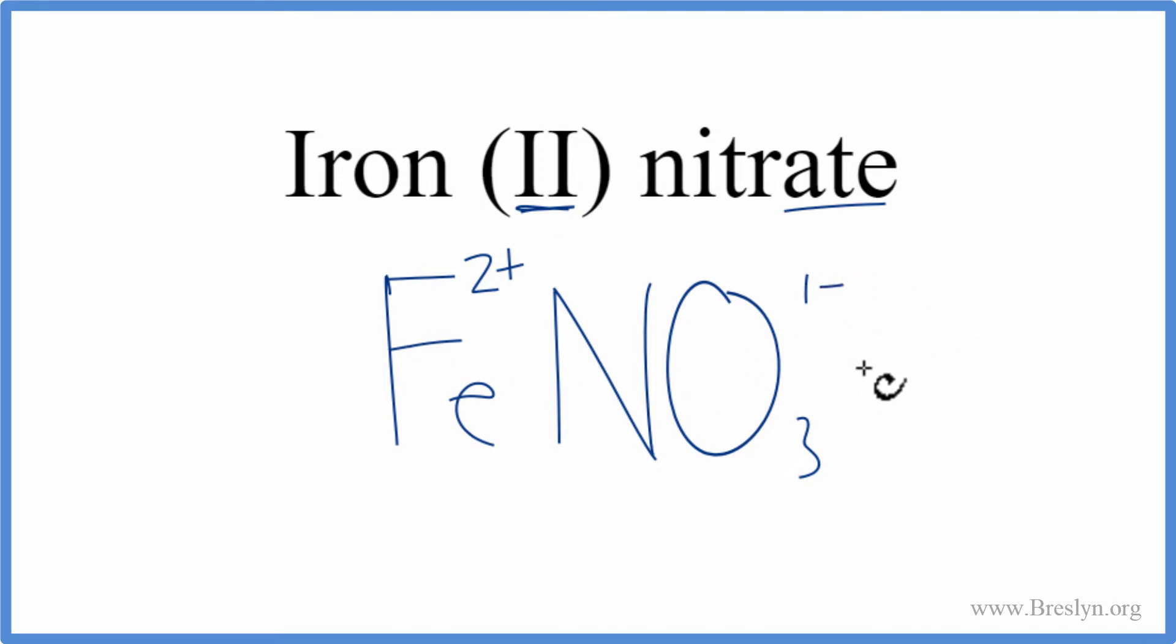So these charges, they need to add up to 0 to have a net charge of 0 for this to be a neutral compound. So we can use something called the crisscross method to figure out how to change the subscripts to get this to be neutral.